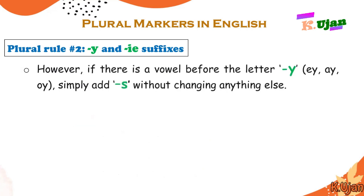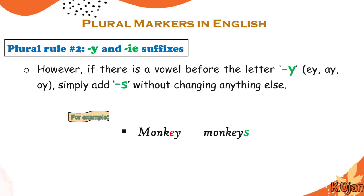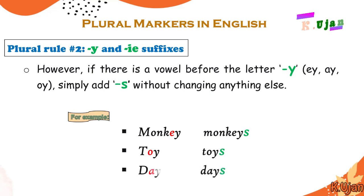This is part 2 of rule number 2. Sometimes when Y is preceded by a vowel letter — like EY, AY, OY — we only add S with no change of Y to I. For example, monkey: we are not changing Y to I, only adding S because of the vowel before Y — monkey/monkeys. Similarly, day/days, because of the vowel A before Y.